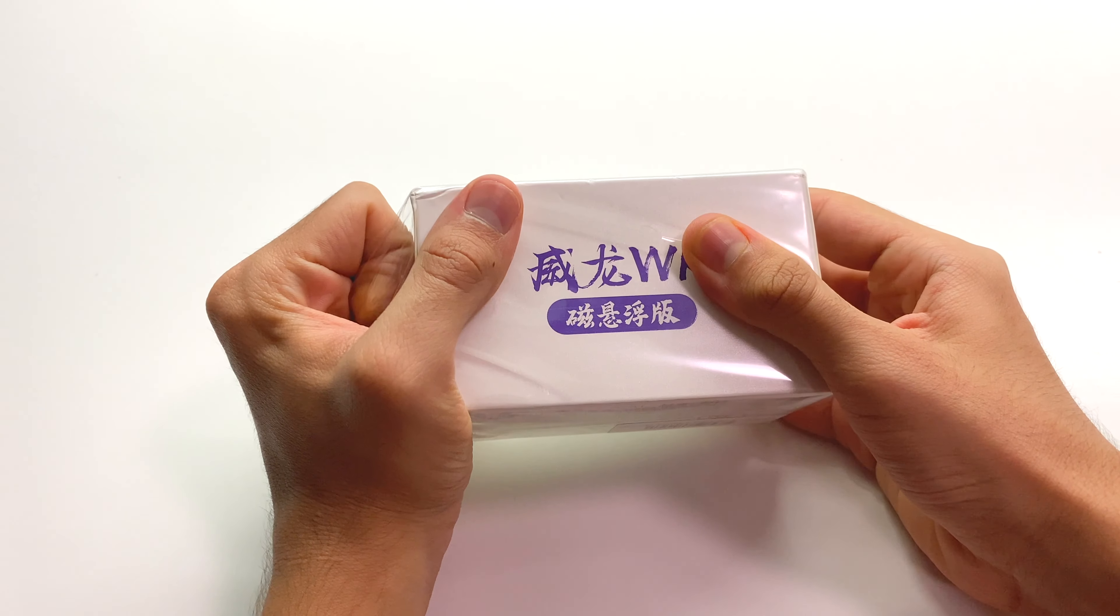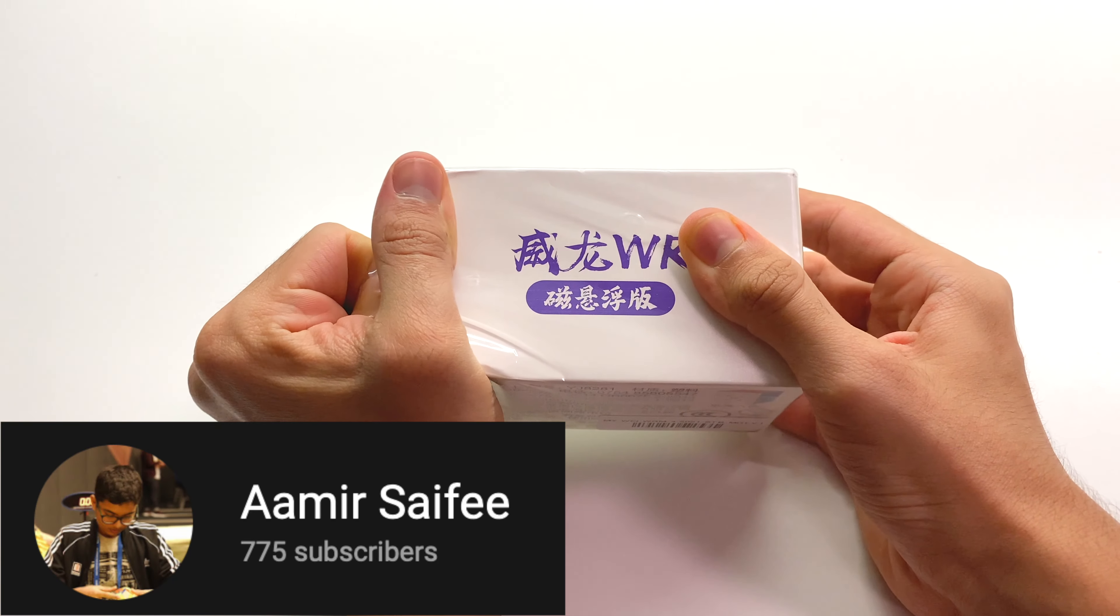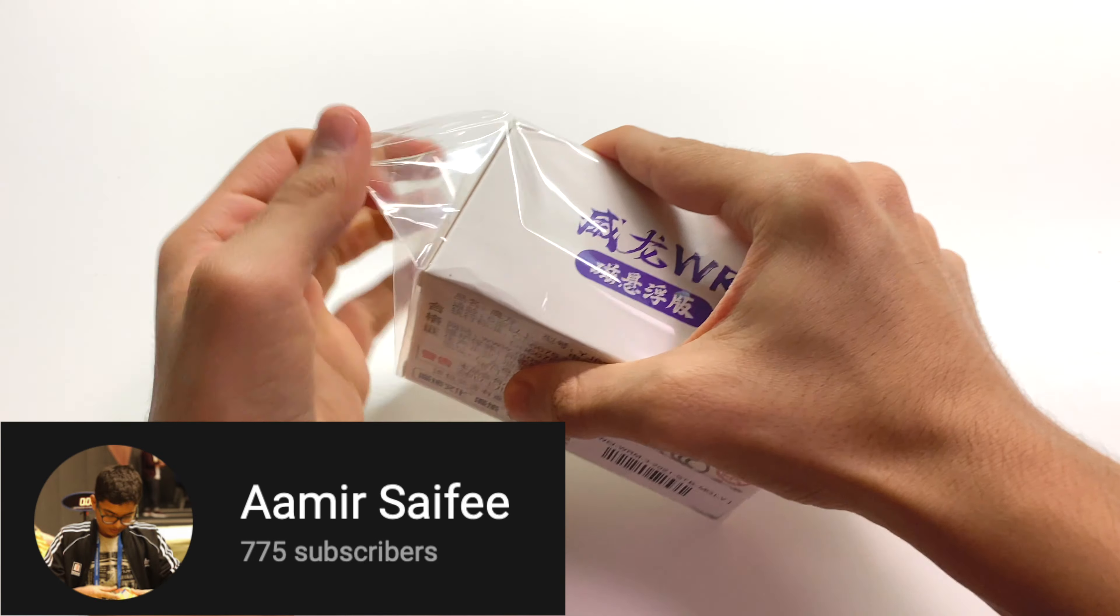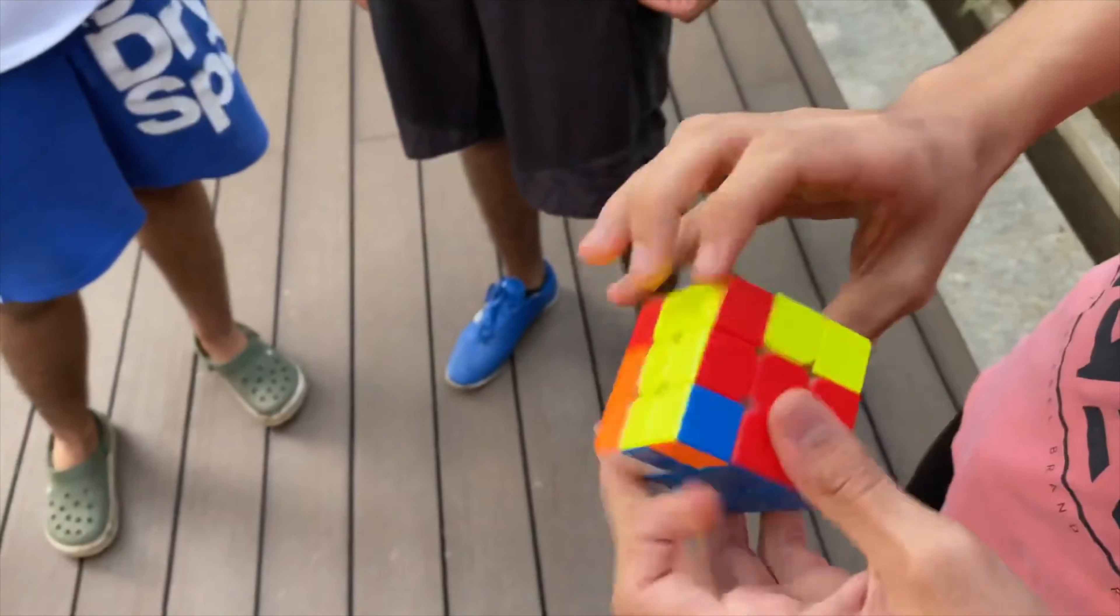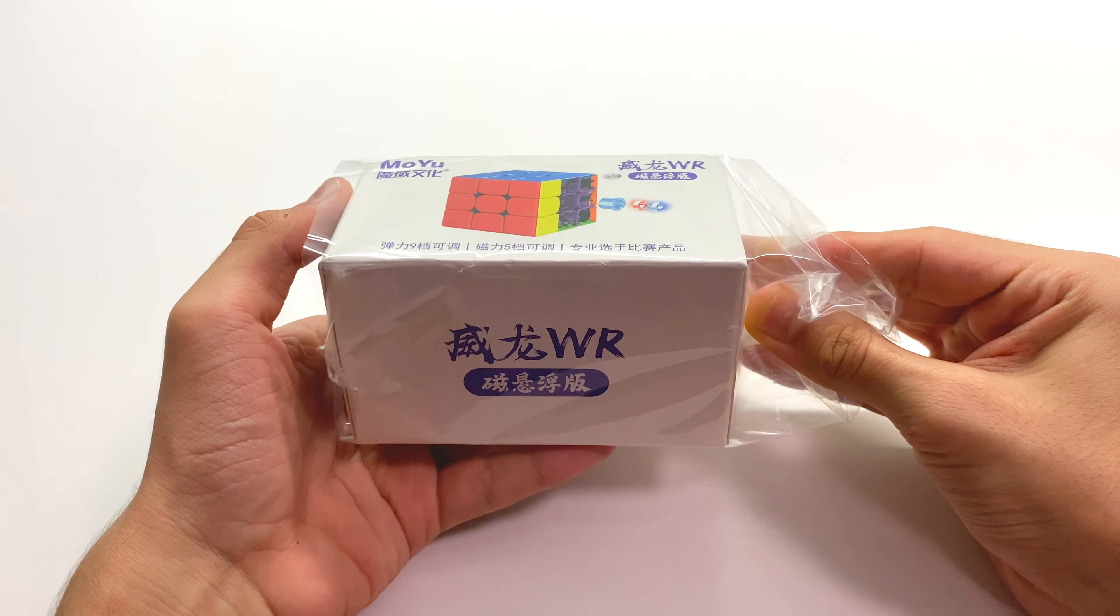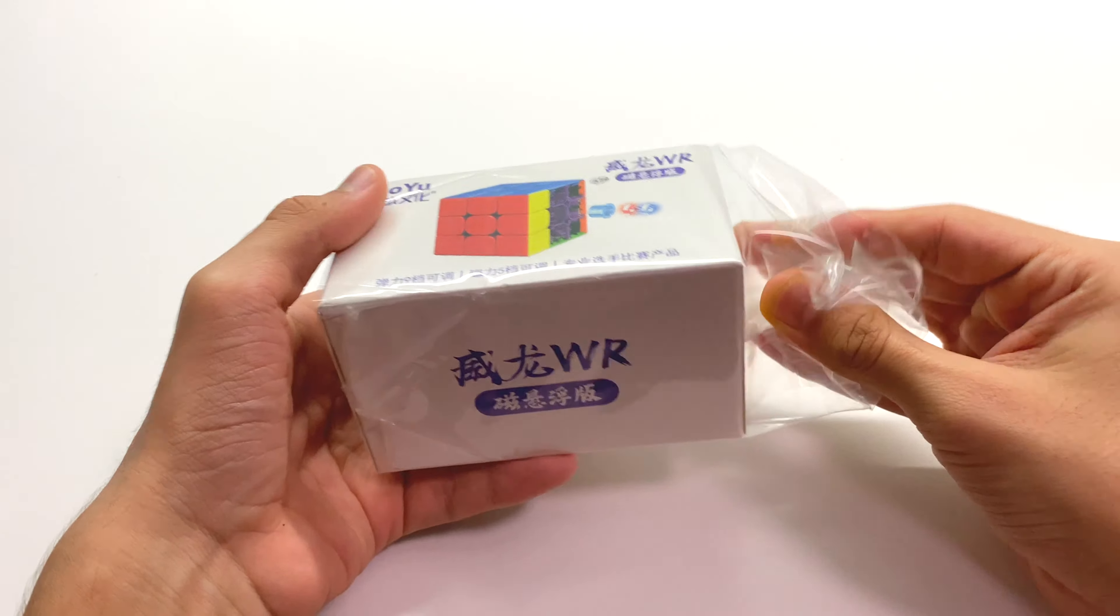So around June of last year, my friend Amir Saifi got a Moyu Weylong WRM 2021 straight from Moyu to test out. I actually got to try it out at a meetup, and my biggest problem with it was that it was just way too slow. So when I heard that the Maglev version of this cube was incredibly fast, I was absolutely sold and knew I had to get this cube.